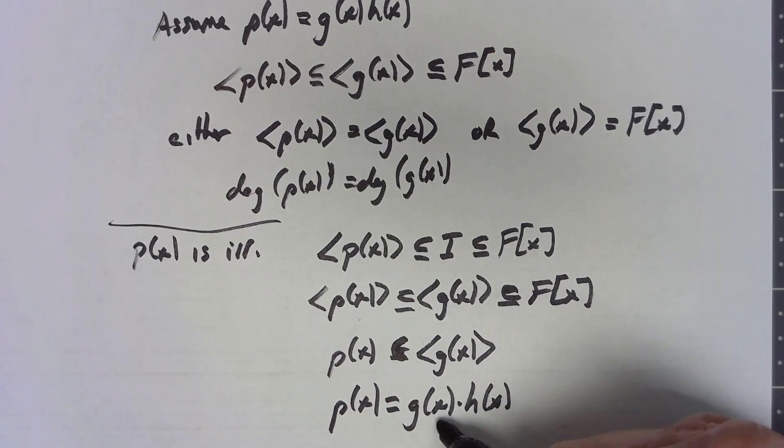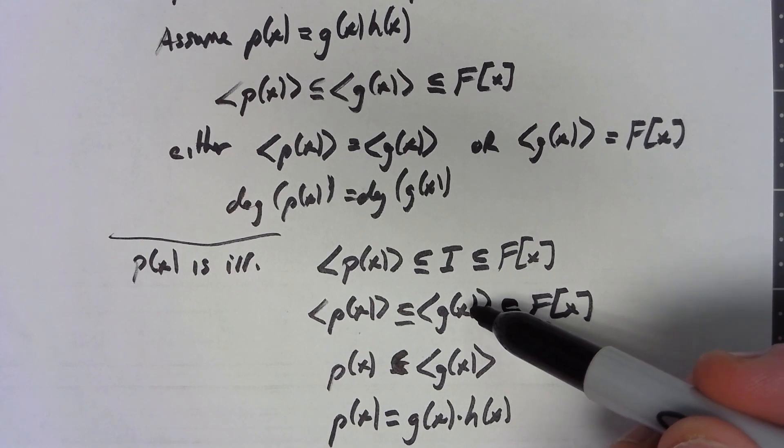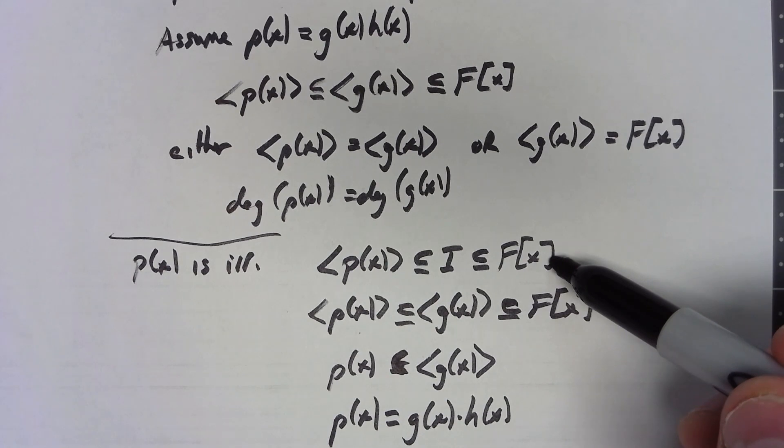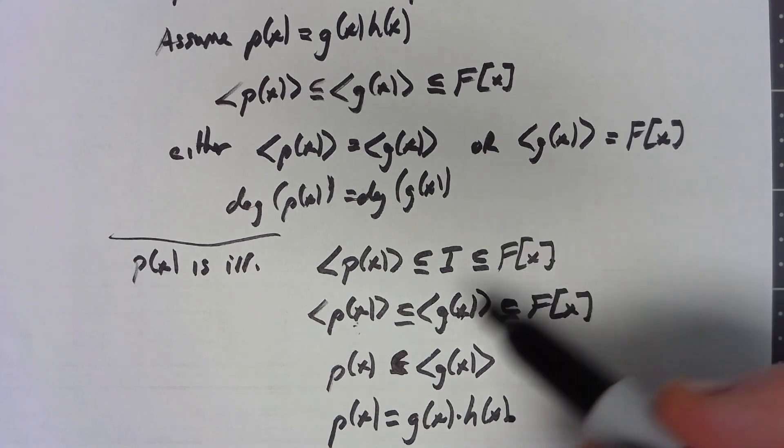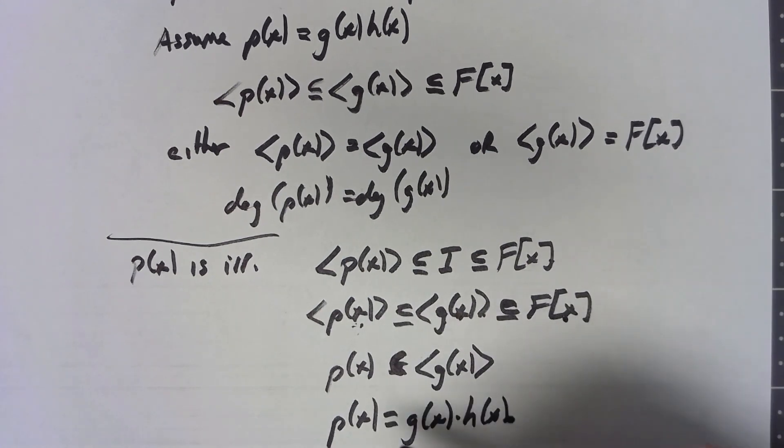And so that means that p(x) is equal to g(x) times some other h(x). But that must mean that either g was a constant or h is a constant. So if g is a constant, that means that the ideal is equal to all of F[x]. That must mean that p(x) equals g(x). These ideals are the same. Either way, so this is either equal to this or equal to this, which is the definition of p(x) being a maximal ideal.